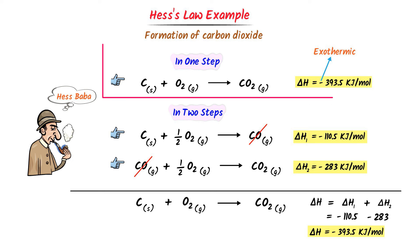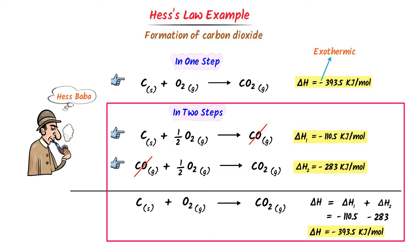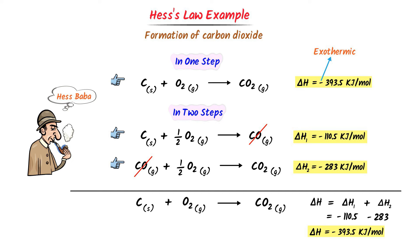Thus, in one step, ΔH = −393.52 kilojoule per mole, and in these two steps, ΔH = −393.52 kilojoule per mole. Therefore, Hess's Law states that enthalpy change in a chemical reaction is the same, whether it occurs in one step or multiple steps. Note down this important example.